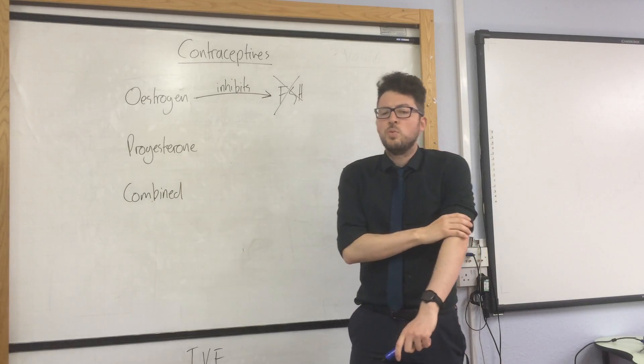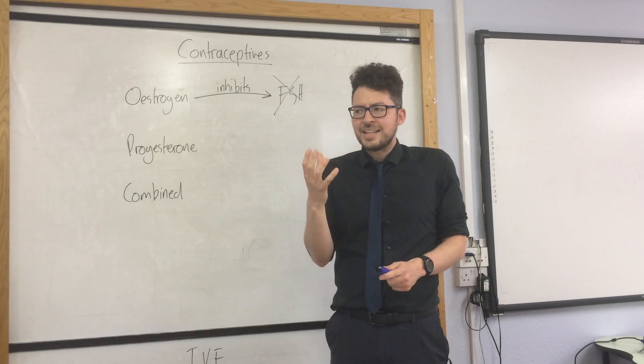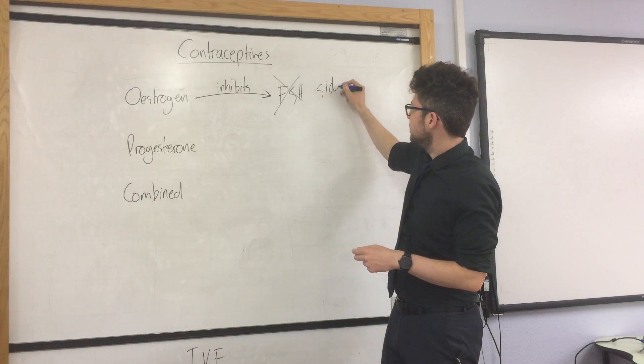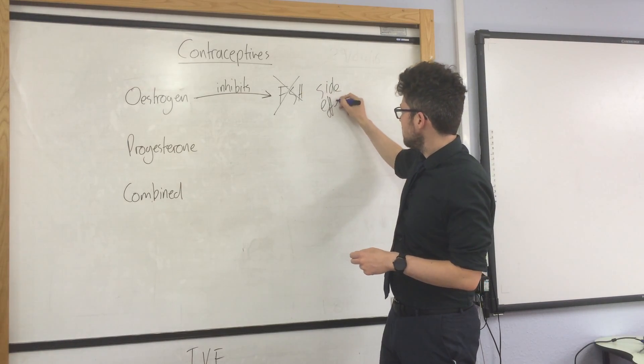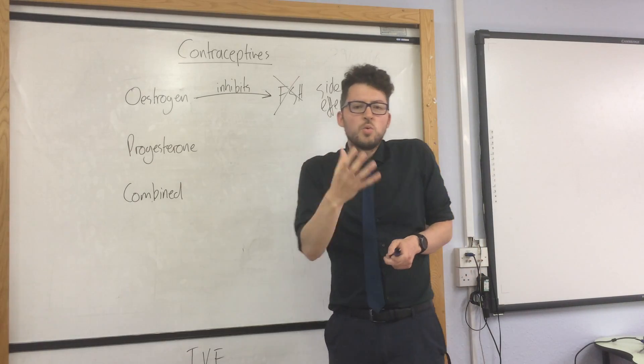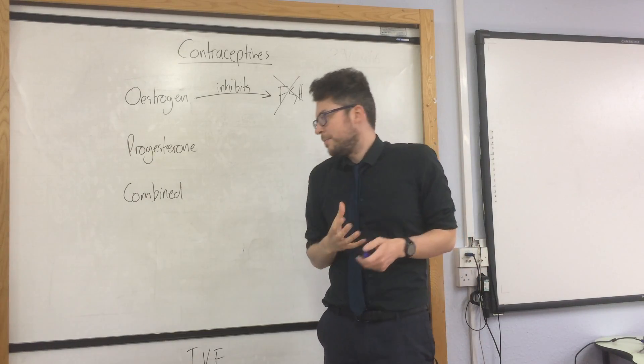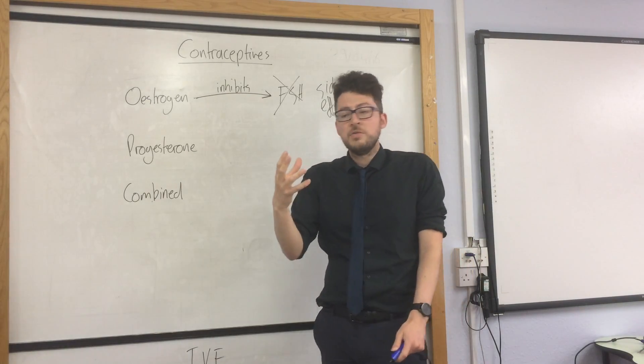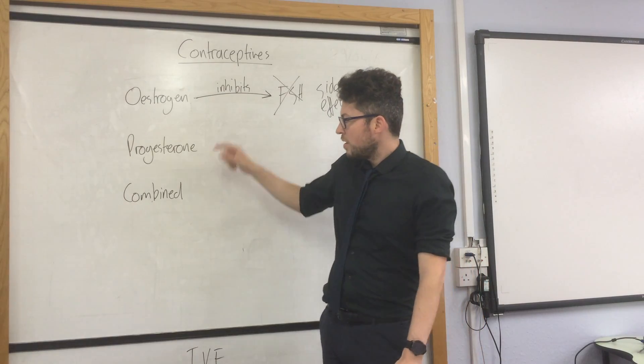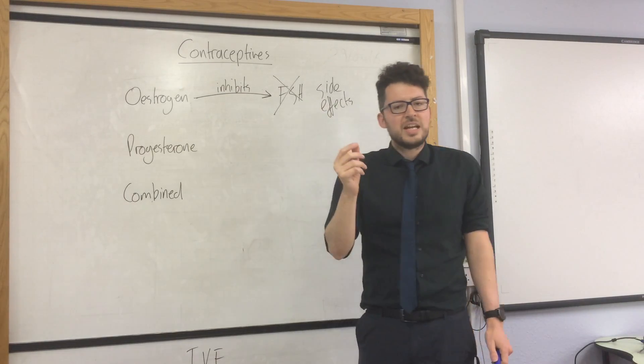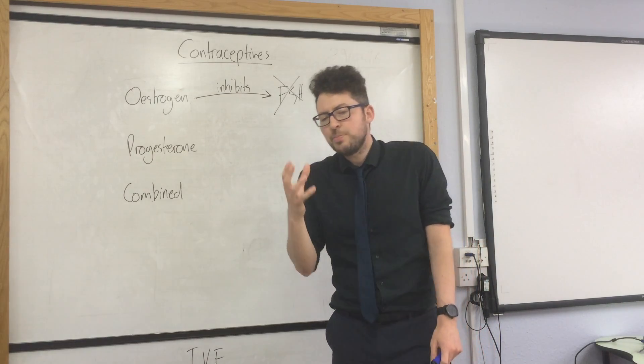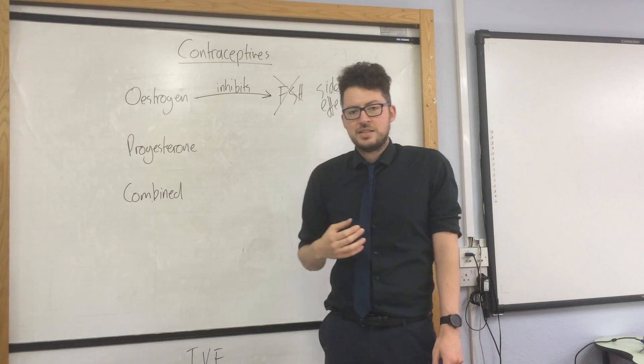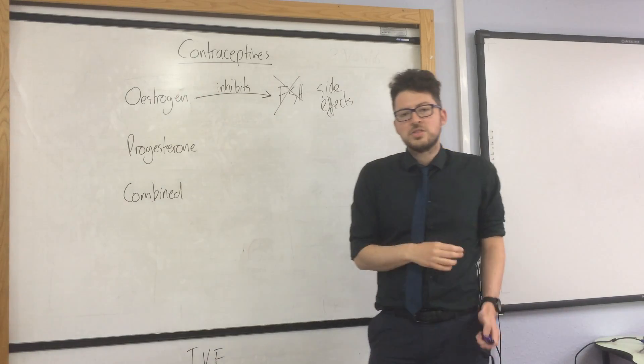That's how the oestrogen pill worked. Now there were a few problems with it. It had some effects on the woman's health which we call side effects. So what they developed was another pill called the progesterone pill, which is another hormone. You don't need to know how that works. Or the combined pill which contains both oestrogen and progesterone. The key point is that they reduce the amount of oestrogen because it caused health side effects. That's what we need to know about contraceptives.